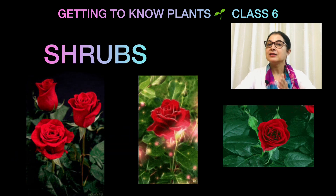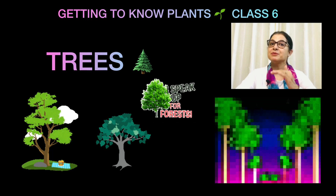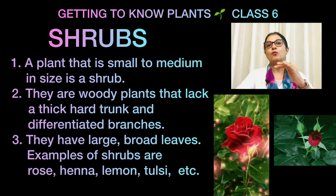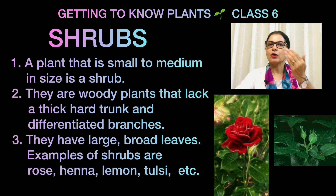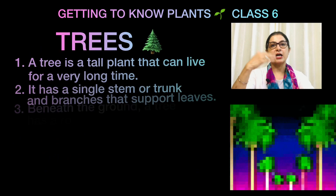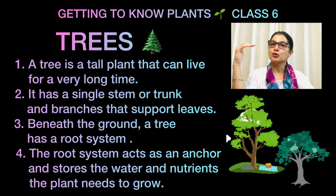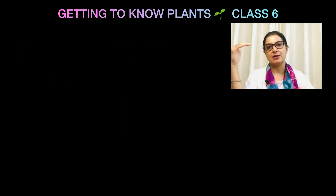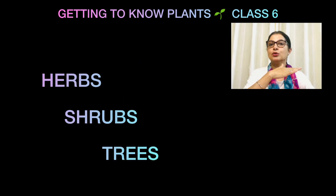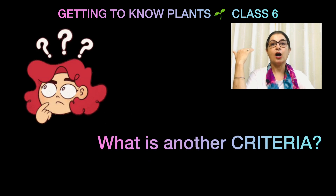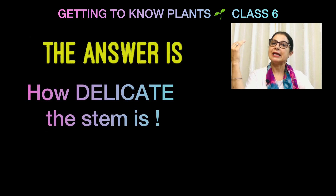The smallest height plants we call herbs, the next taller ones we call shrubs, and the tallest we call trees. So depending upon the height of the plants, we can divide them into herbs, shrubs, and trees. Another criteria is how delicate the stem is.